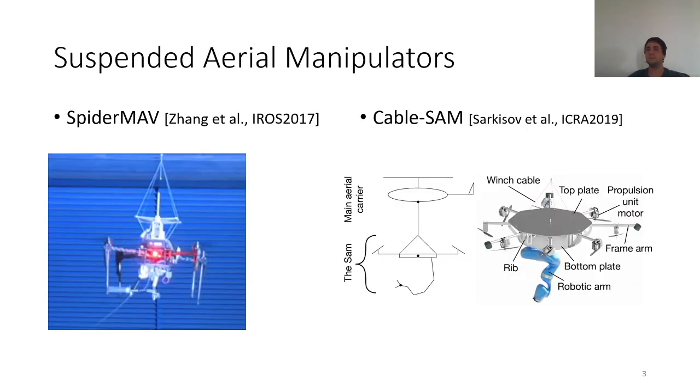Indeed, a similar concept already exists in the field of aerial manipulation but with propellers rather than cold gas thrusters. At the left you can see the spider map, a quadcopter that uses a cable to suspend in order to optimize its energy consumption and to deal with windy conditions. At the right we have the cable sand, the cable suspended aerial manipulator. It's an omnidirectional drone equipped with a robotic arm and is suspended by a winch activated cable to an aerial carrier.